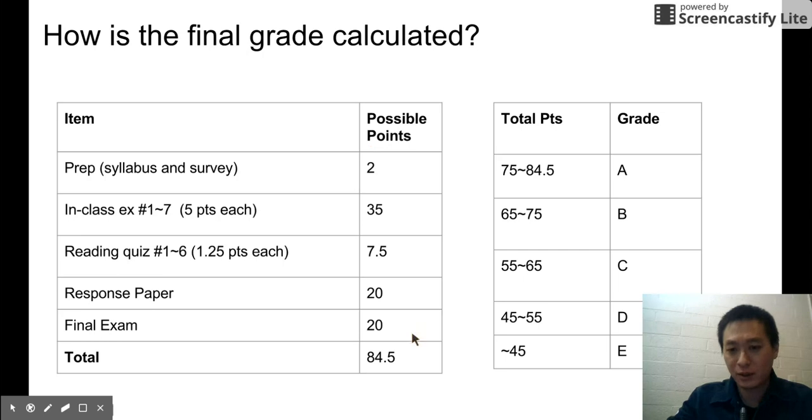So I'm going to do it this way. We have all the possible points here. For the preparation, two possible points. The in-class exercise, five points each, and we have seven ones, so it would be 35. And for reading quizzes, the total possible points is 7.5. And the response paper is 20. And the final exam, the original one is 30. I made some adjustment here because I don't want the final exam to take a large proportion. So I changed the points. Now it's 20. So all the possible points would be 84.5.